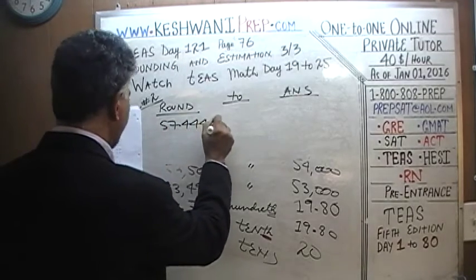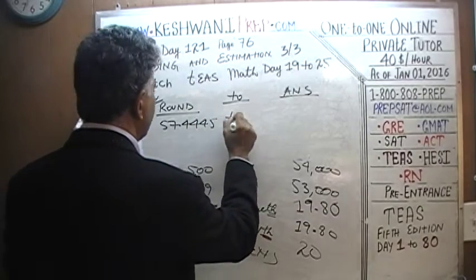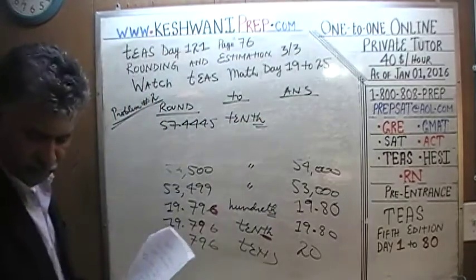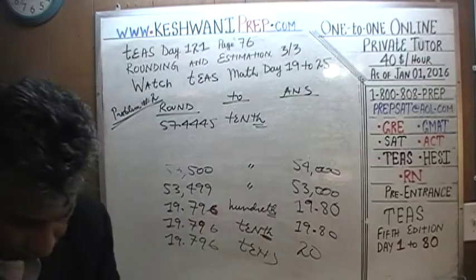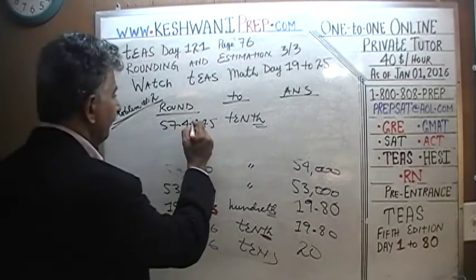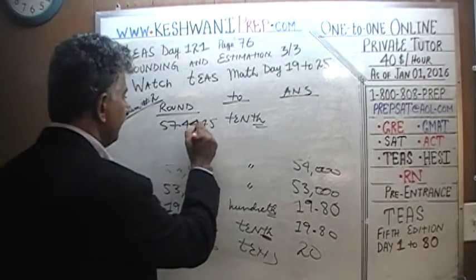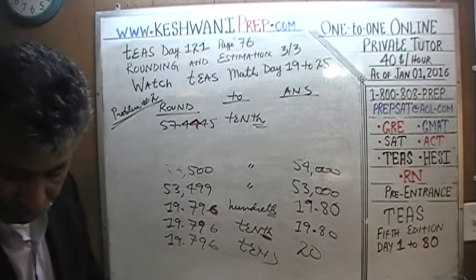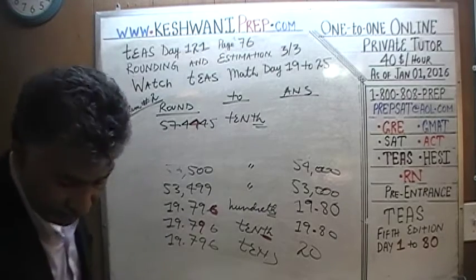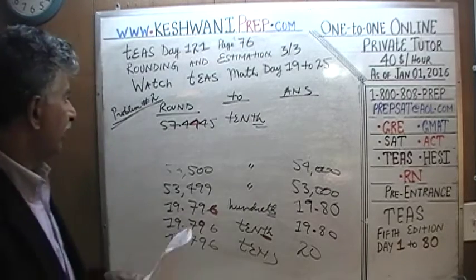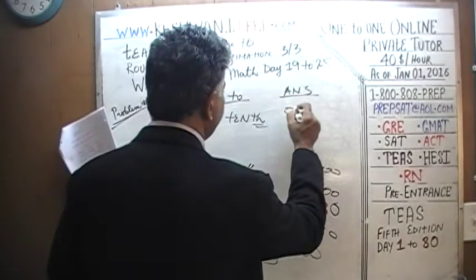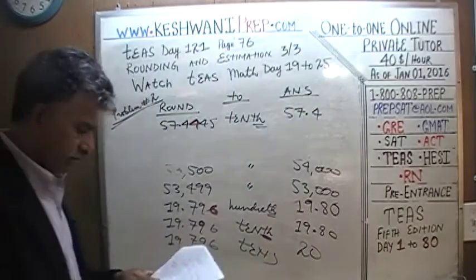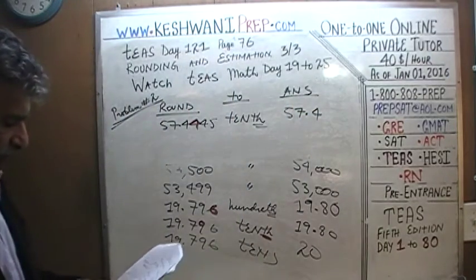57.4445 rounded to the nearest tenth. The hundredths digit is 4. Since 4 is less than 5, when you round it to the nearest tenth it's just going to become 57.4.